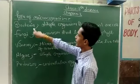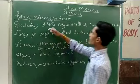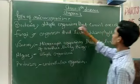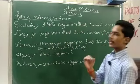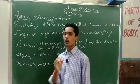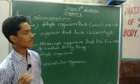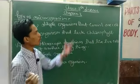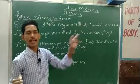First we have bacteria. Bacteria is a simple organism that consists of one cell. It is a simple organism that you can see is made of one cell.